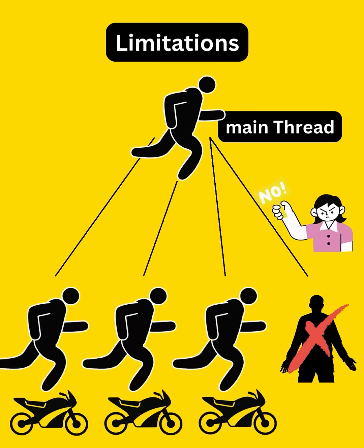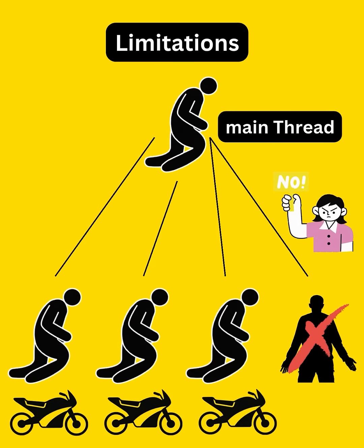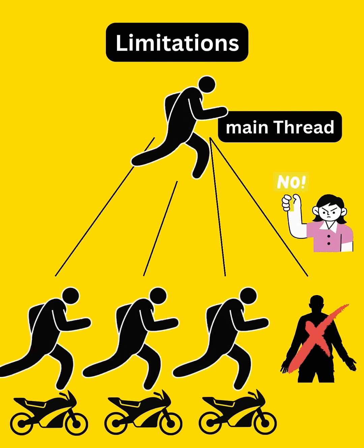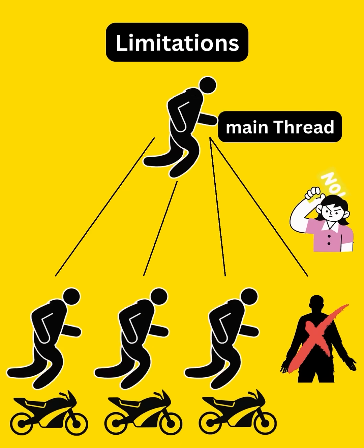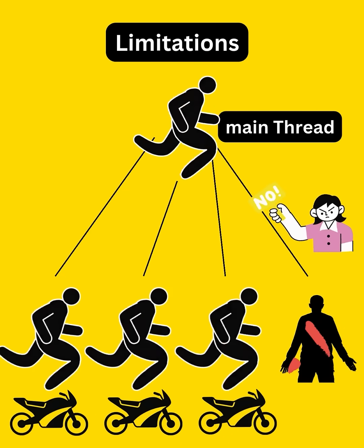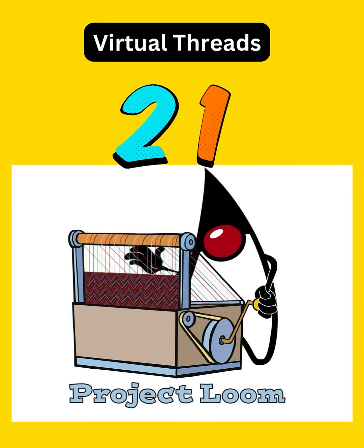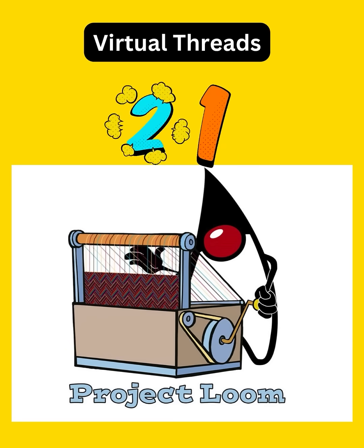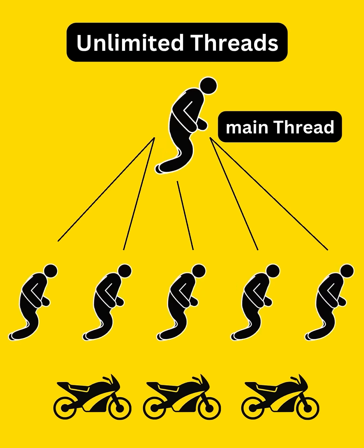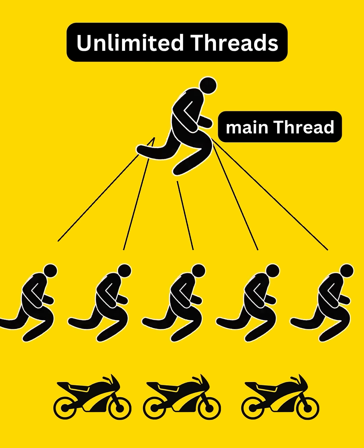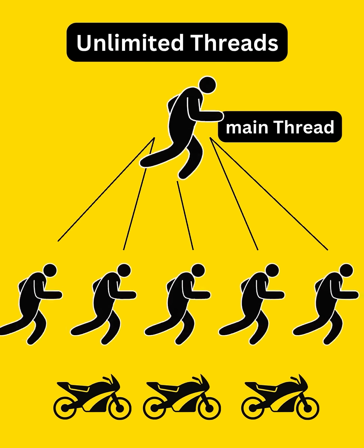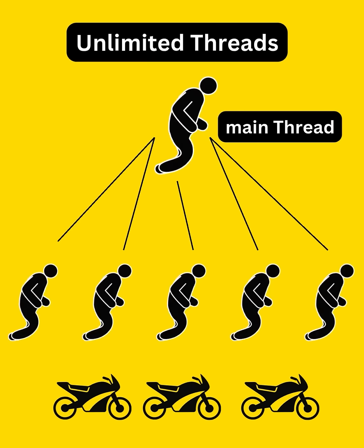Every platform thread maps to an OS thread, which is heavy, and hence its size depends on infrastructure. But since Java 21, we have virtual threads as part of Project Loom. These threads are lightweight, JVM-managed, and not tightly coupled with OS threads.